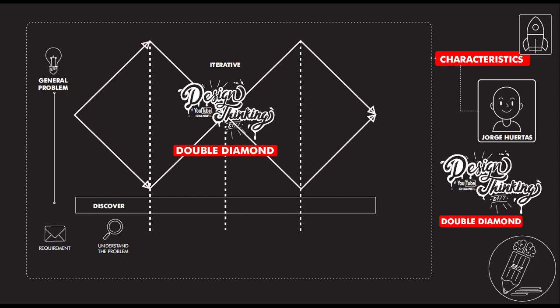You need to start looking at how it works and what are the components of each problem. The tool of the problem tree is very good for this stage, so you can understand what's going on and figure out possible alternatives.